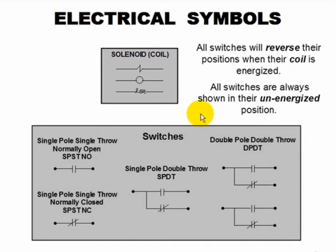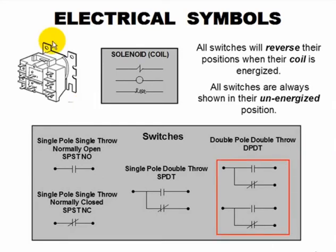Now, understand that all switches will reverse their positions. They're normally unenergized positions when the coil is energized. All switches are always shown in their unenergized position. All these switches, this is the switch part, is shown unenergized. These are the coil. When this coil gets energized, they all change position. Whatever they are, they go the opposite. And there's no in-between. It's open or closed. If you have in-between, that's when you let the smoke out of the relay.